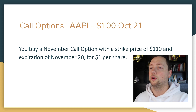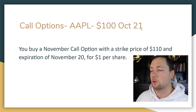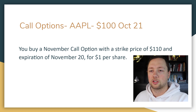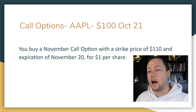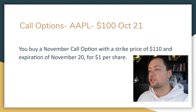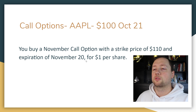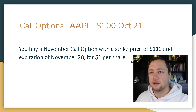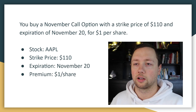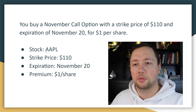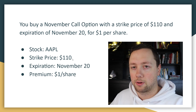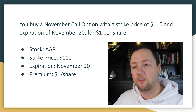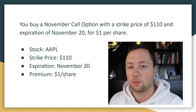In this example we are looking at Apple stock, which on October 21st is currently trading at $100. You are going to buy a call option with a strike price of $110 and an expiration of November 20th, and you are going to pay $1 per share as the premium. So the stock is Apple, strike price is $110, expiration date is November 20th, and the premium is $1 per share.